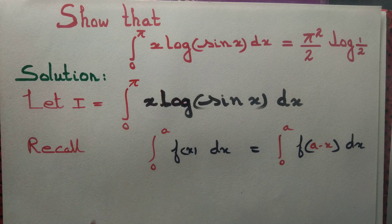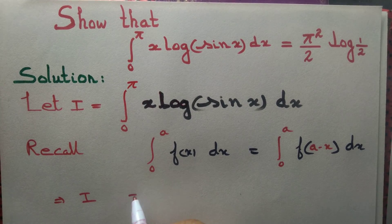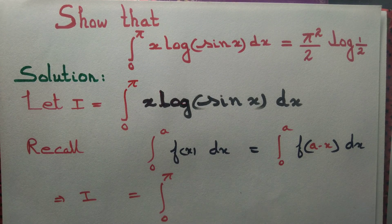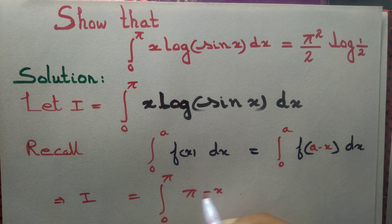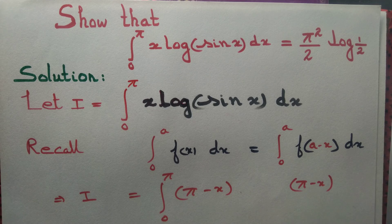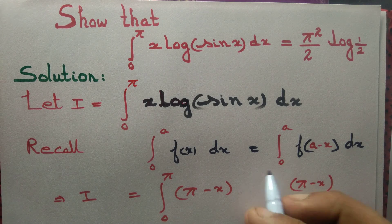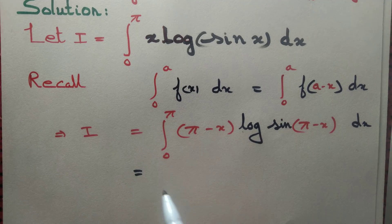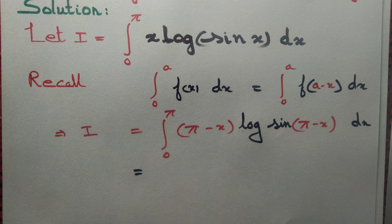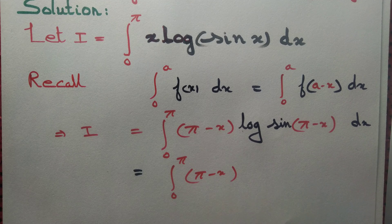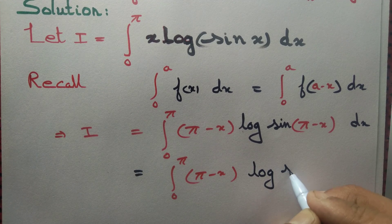Therefore I equals the integral from 0 to π — replacing x by π minus x, the integral remains unchanged — giving the integral from 0 to π of (π minus x). Now sin(180° - θ) = sin θ, so this equals the integral of (π - x)·log(sin x)dx.